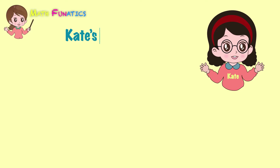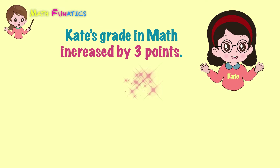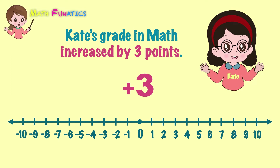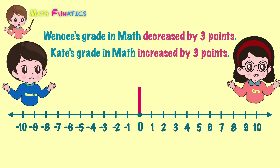On the other hand, Kate's grade in math increased by 3 points. This is best represented by positive 3. On the number line, positive 3 is found 3 units to the right of 0. If we put both situations on the same number line, we see that the two integers are of the same distance from 0 but are on opposite sides.